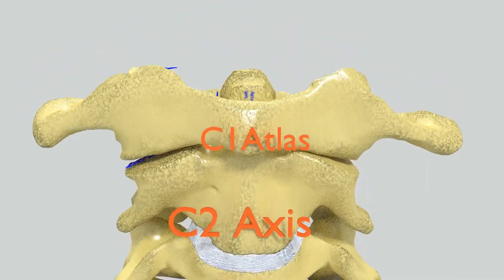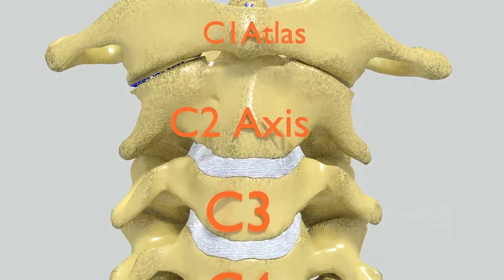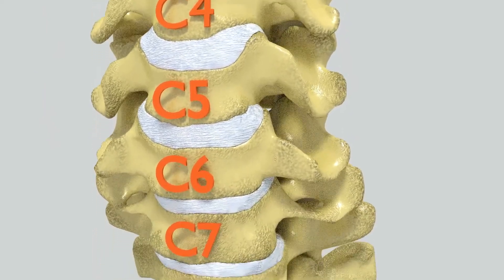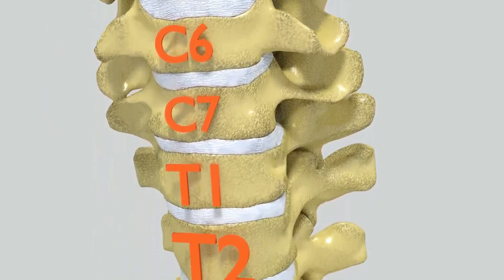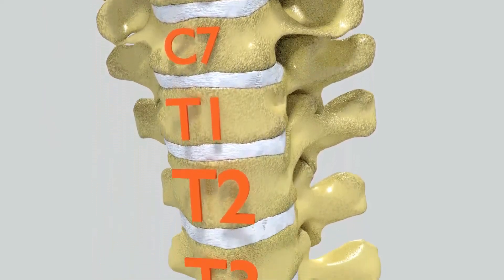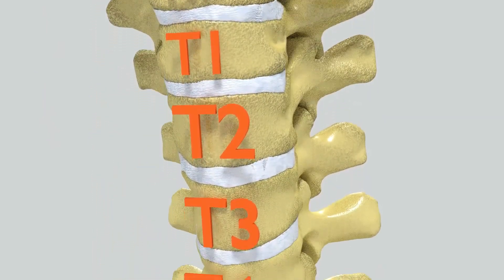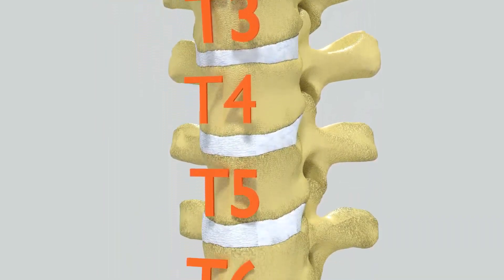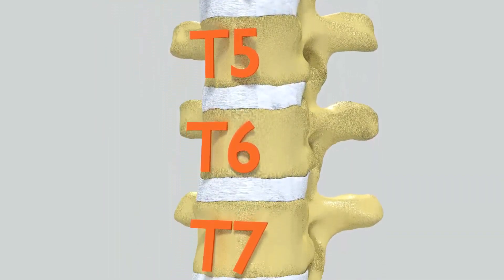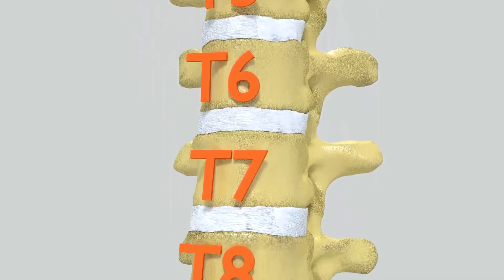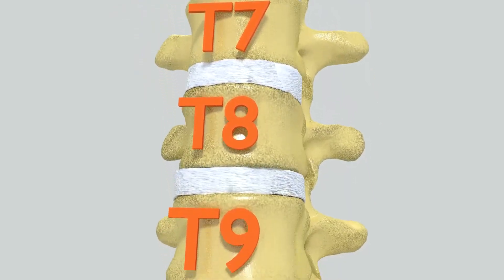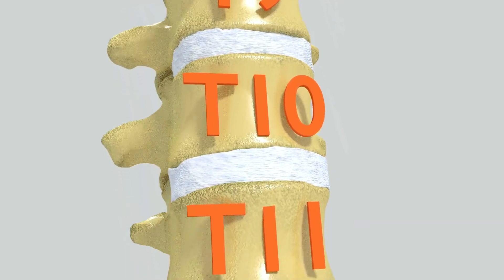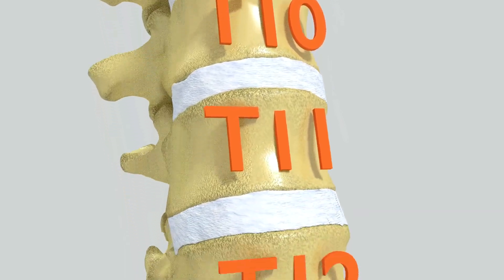As you can see, there are a total of 7 cervical vertebrae. The thoracic vertebrae, caudal to the cervical vertebrae, are 12 in number. The thoracic vertebra consists of the body, arch, costovertebral joint, and facet joints.